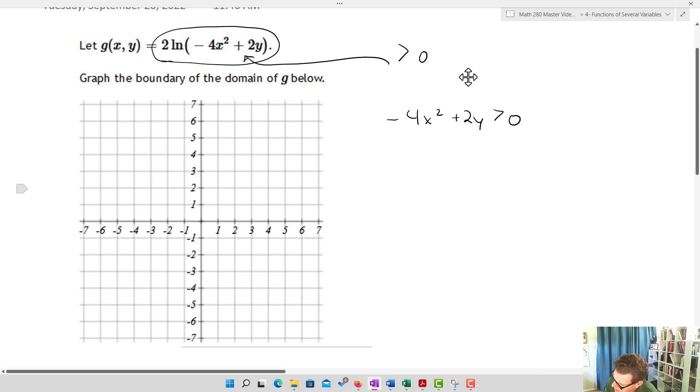Okay, so now what I'm going to do is say, well, if I do that, I can make this 2y is greater than 4x squared, right, just by adding 4x squared to both sides. And then I'm going to get y is greater than, in this case by dividing by 2, y is greater than 2x squared.